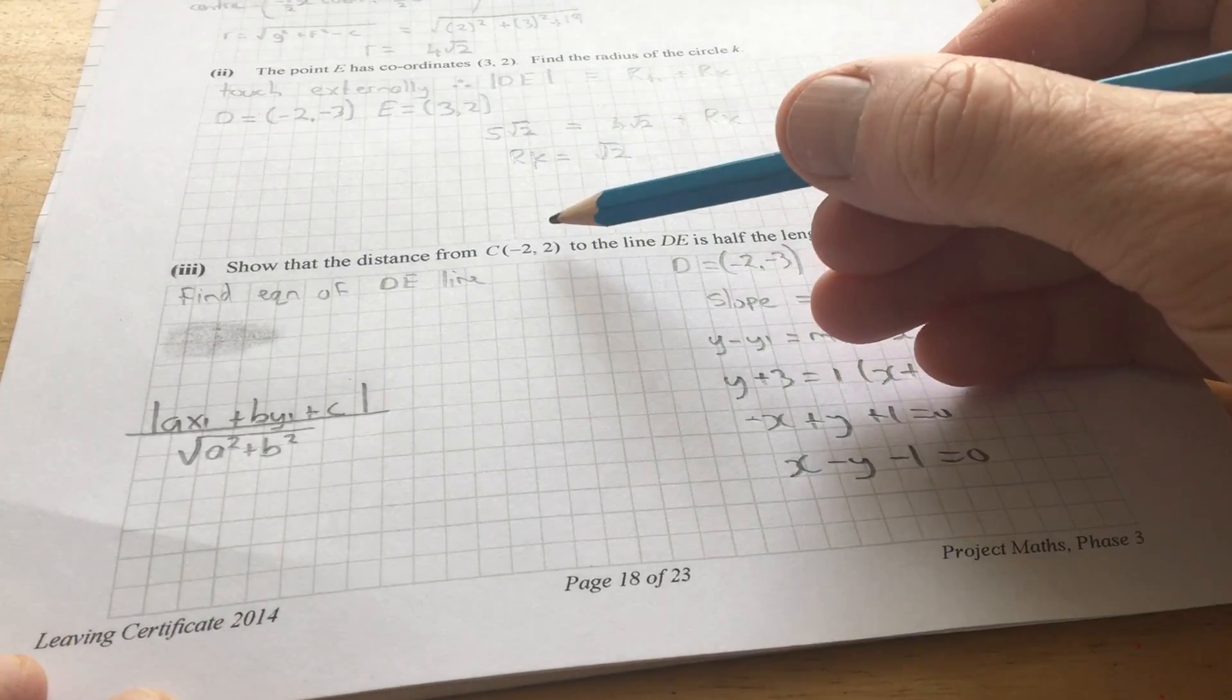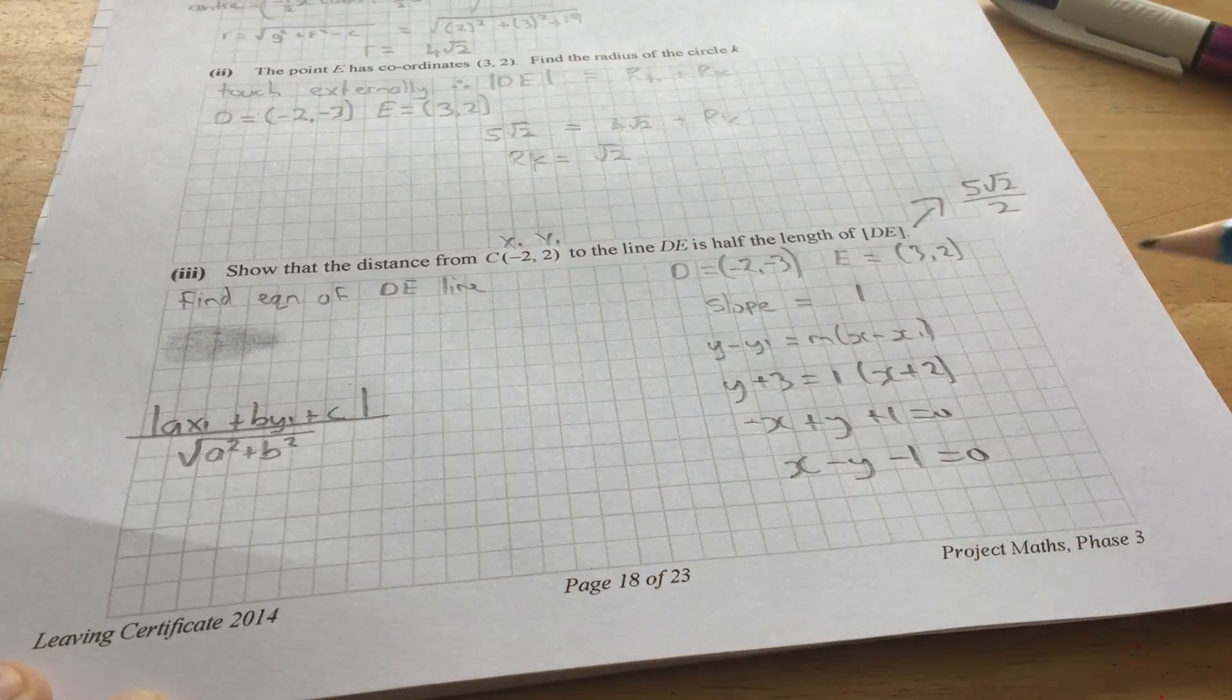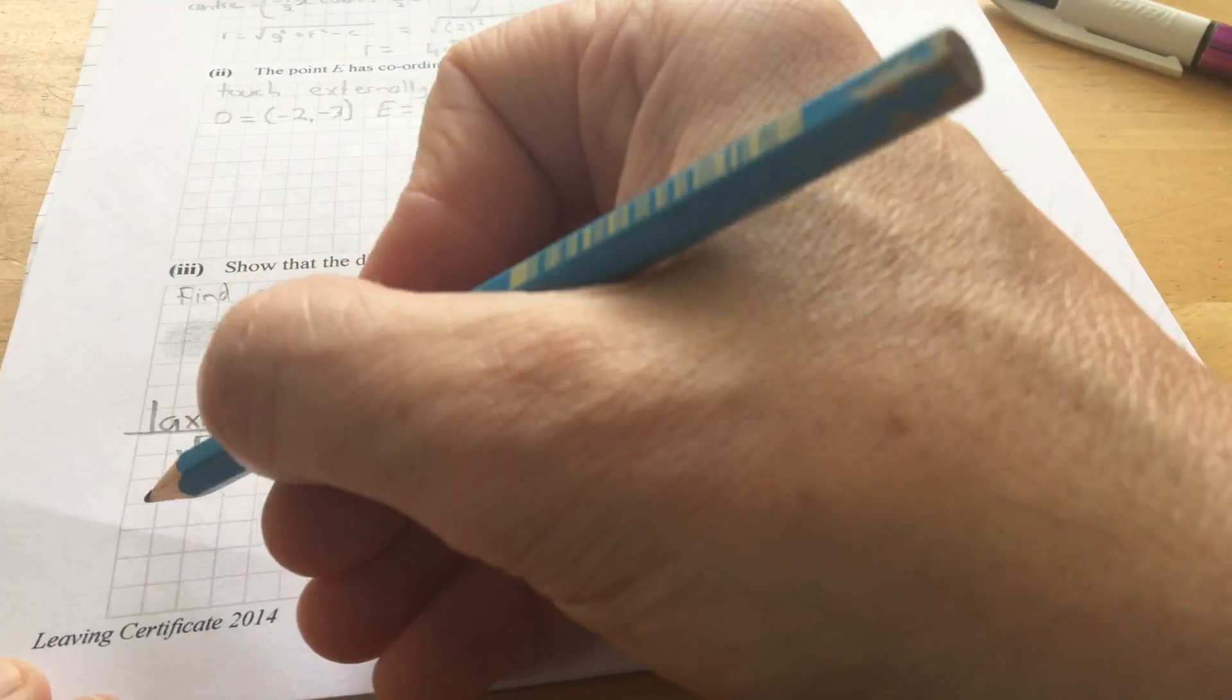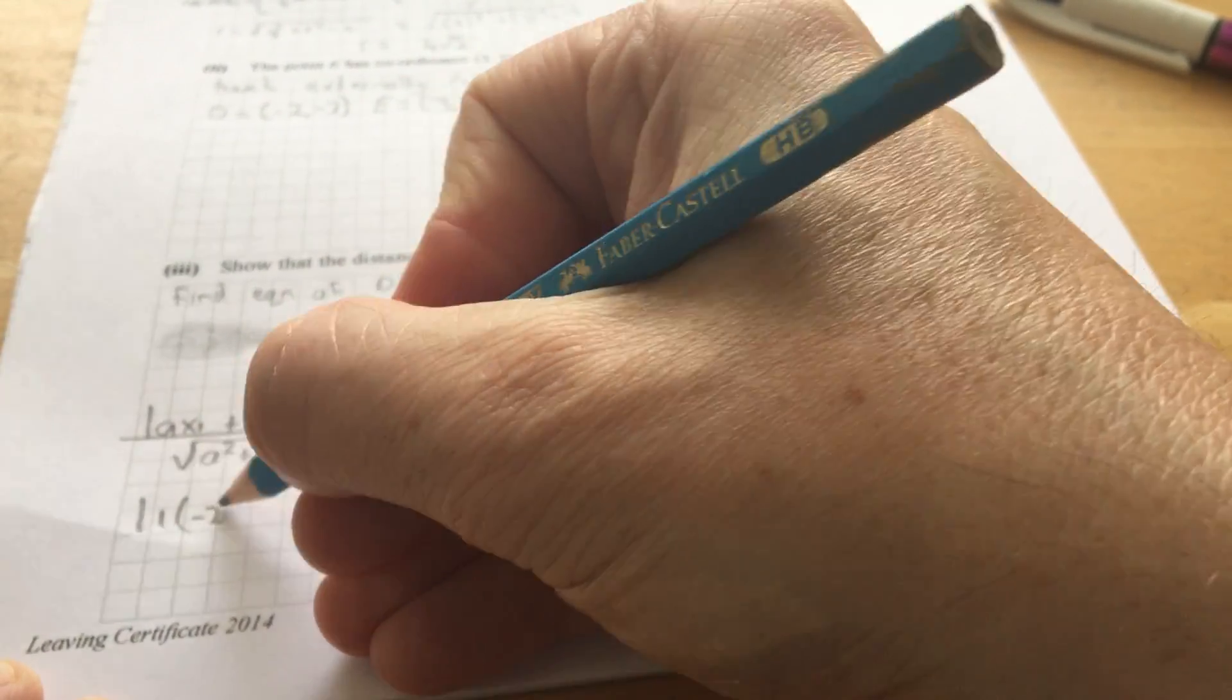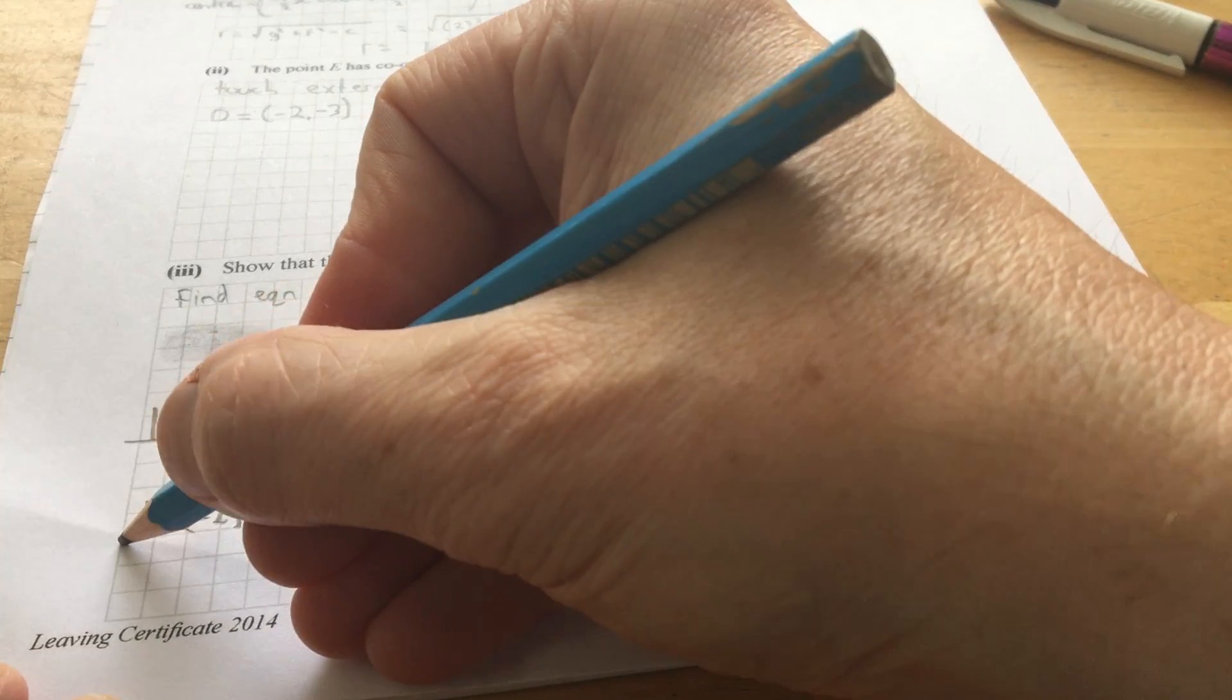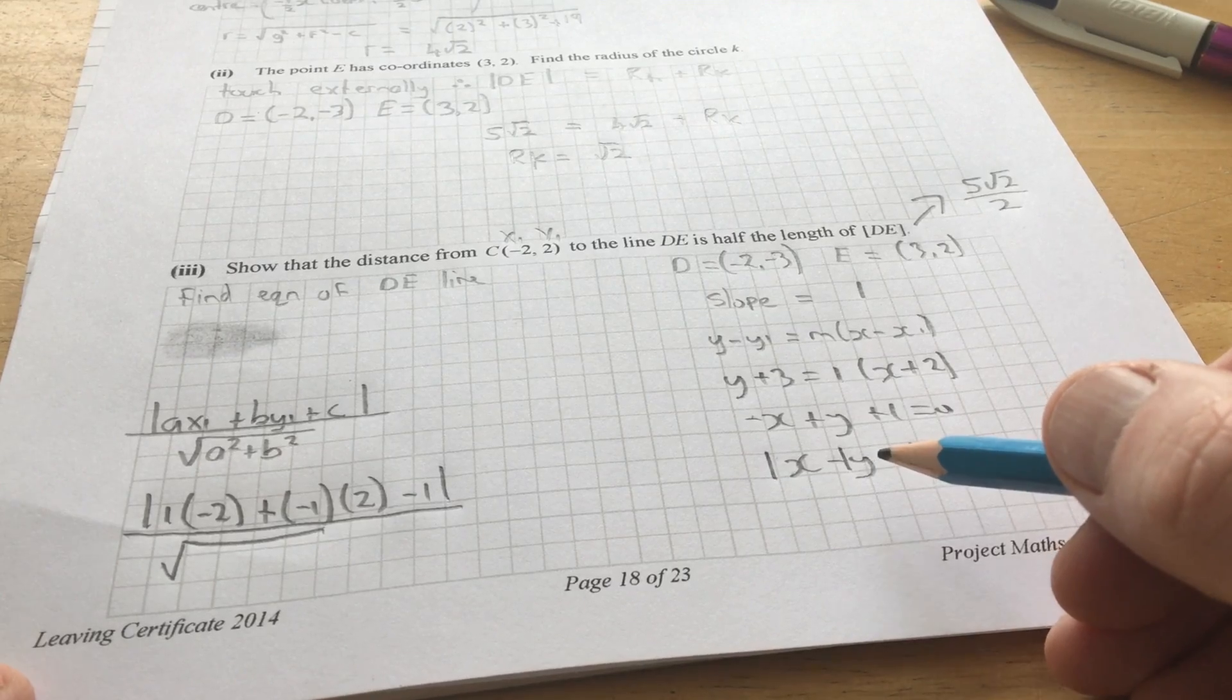Now, then, the distance from the point minus 2, 2 to this line is found by using the perpendicular distance from a point to a line formula. So, this is the point. So, this is X1, Y1. And A is the number in front of X. B is the number in front of Y, which will be minus 1. And C will be minus 1. So, substituting all of those into the formula. So, A is, as we said, 1. X1 is minus 2. B is minus 1. Y1 is 2. And plus C, so plus minus 1, is that. And that's all over the square root of A squared plus B squared. So, 1 squared plus 1 squared will be root 2.